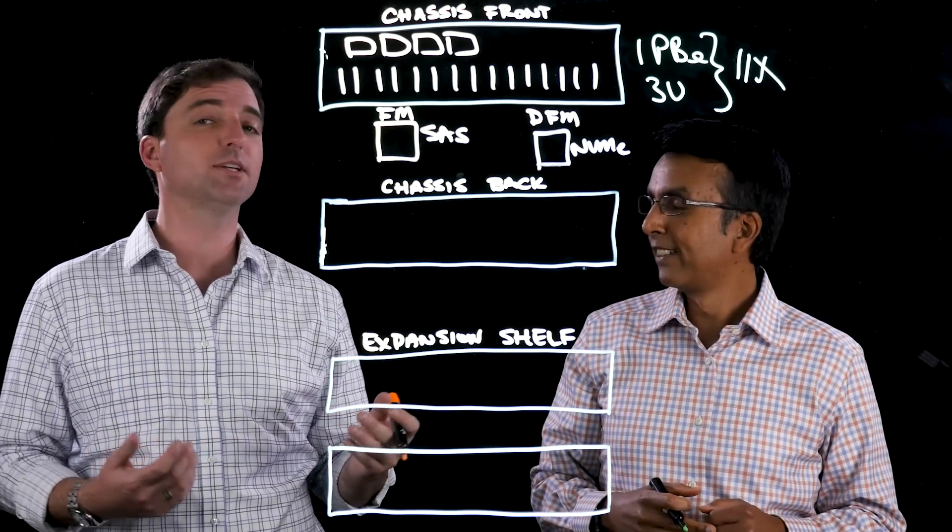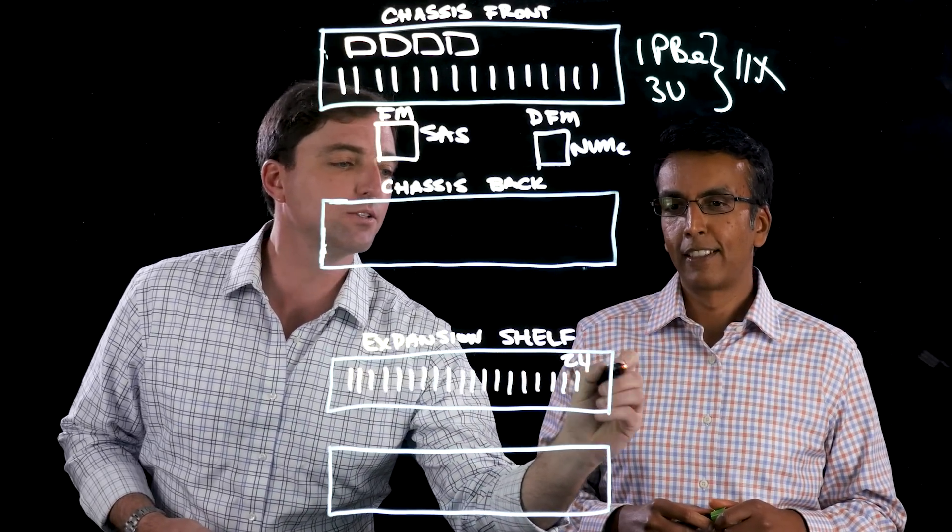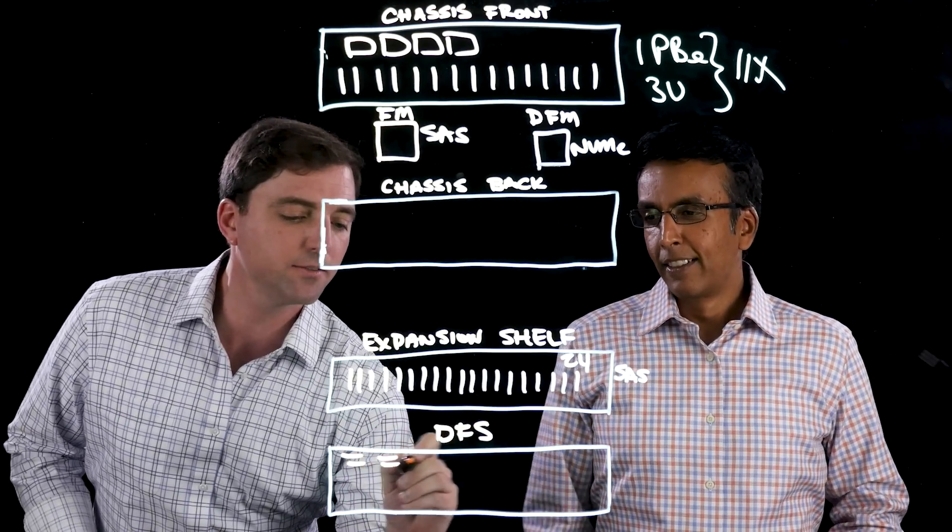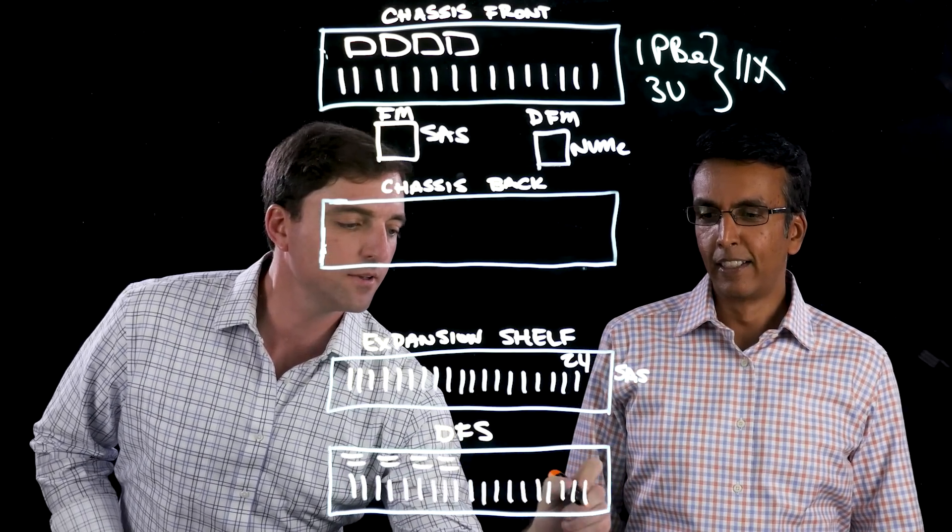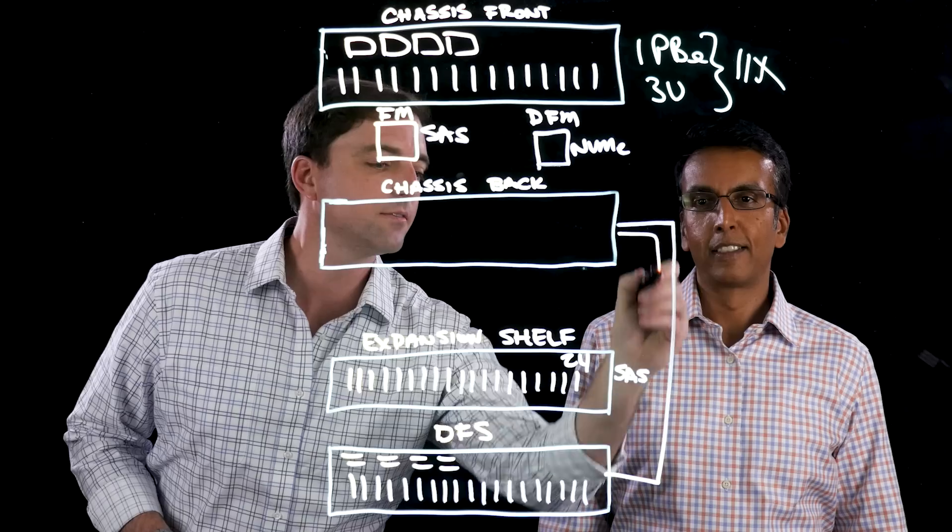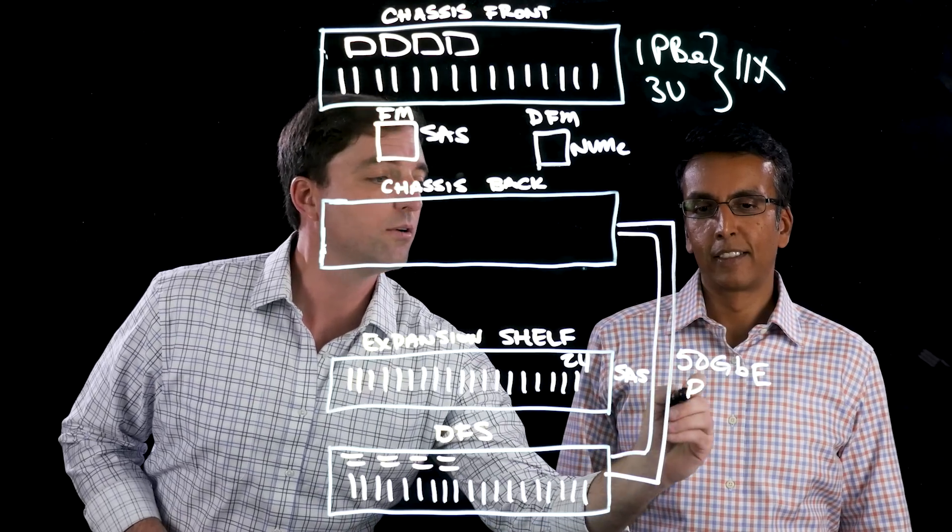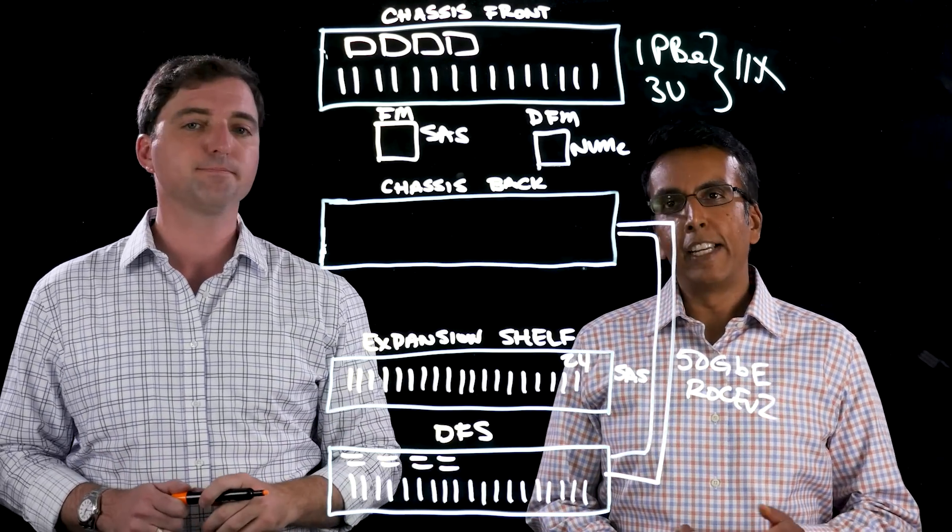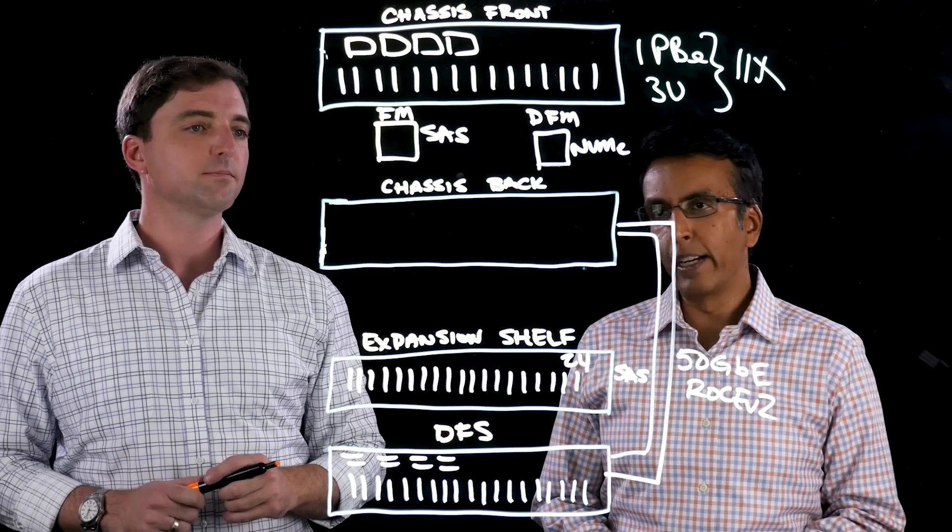And if you need additional expansion, we have our expansion shelves that have 24 Flash drives in each shelf, and this is for our SaaS-based solution. And then with our Direct Flash shelf, we have 28 Direct Flash modules in each shelf. This expansion shelf is connected to our controllers via a 50 Gigabit Ethernet connection, leveraging Rocky version 2, which is RDMA over converged Ethernet. Indeed. So there you have the FlashArray X that preserves the NVMe benefits all the way into the expansion shelf as well.